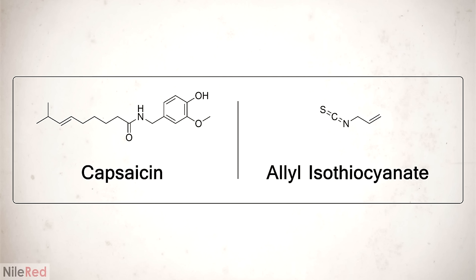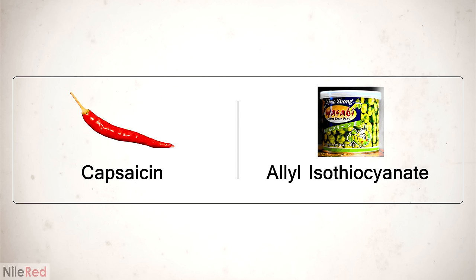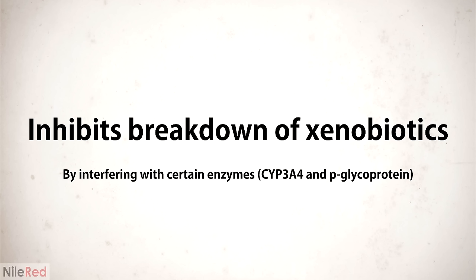Piperine isn't the only molecule that does this and there's two other major ones which are actually a lot more potent: Capsaicin and allyl isothiocyanate. Capsaicin is found in chili peppers and allyl isothiocyanate is found in horseradish and wasabi. I plan to make a video on each of these sometime in the future.